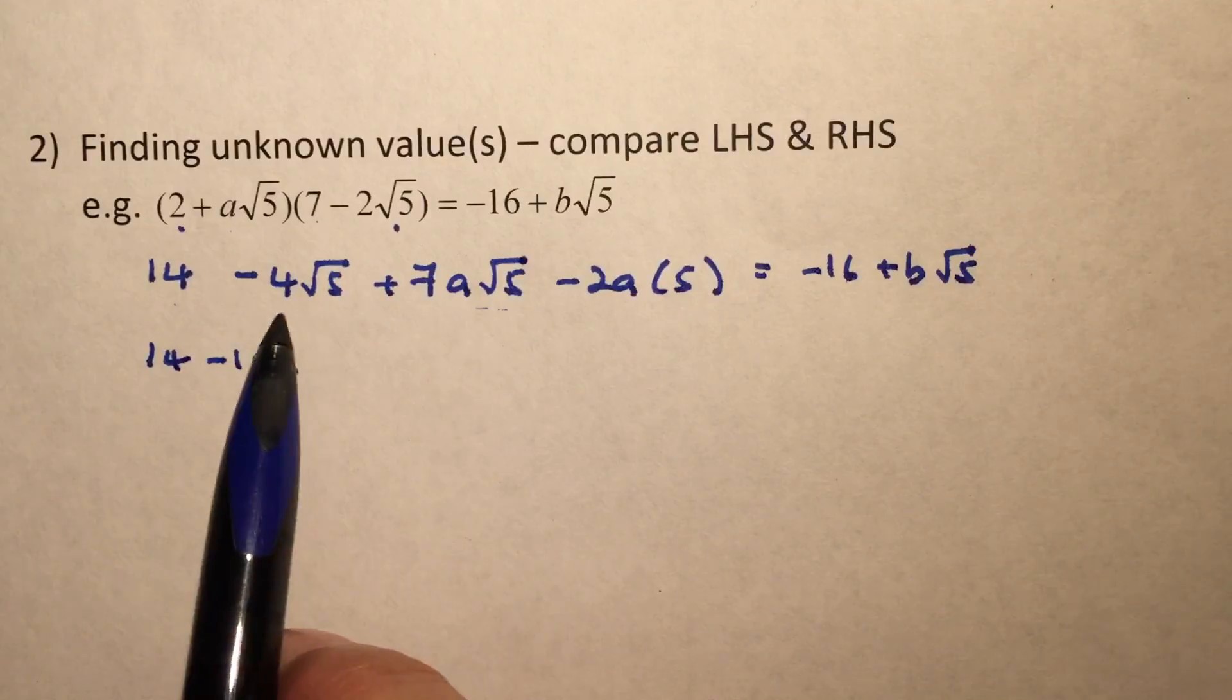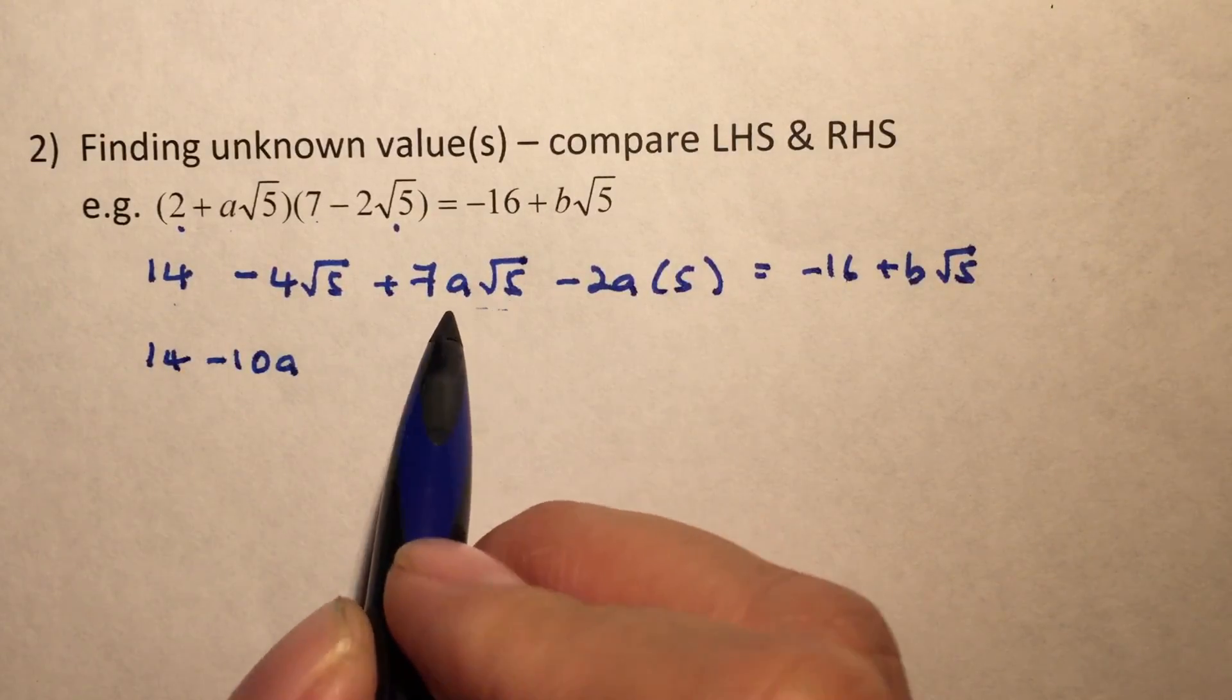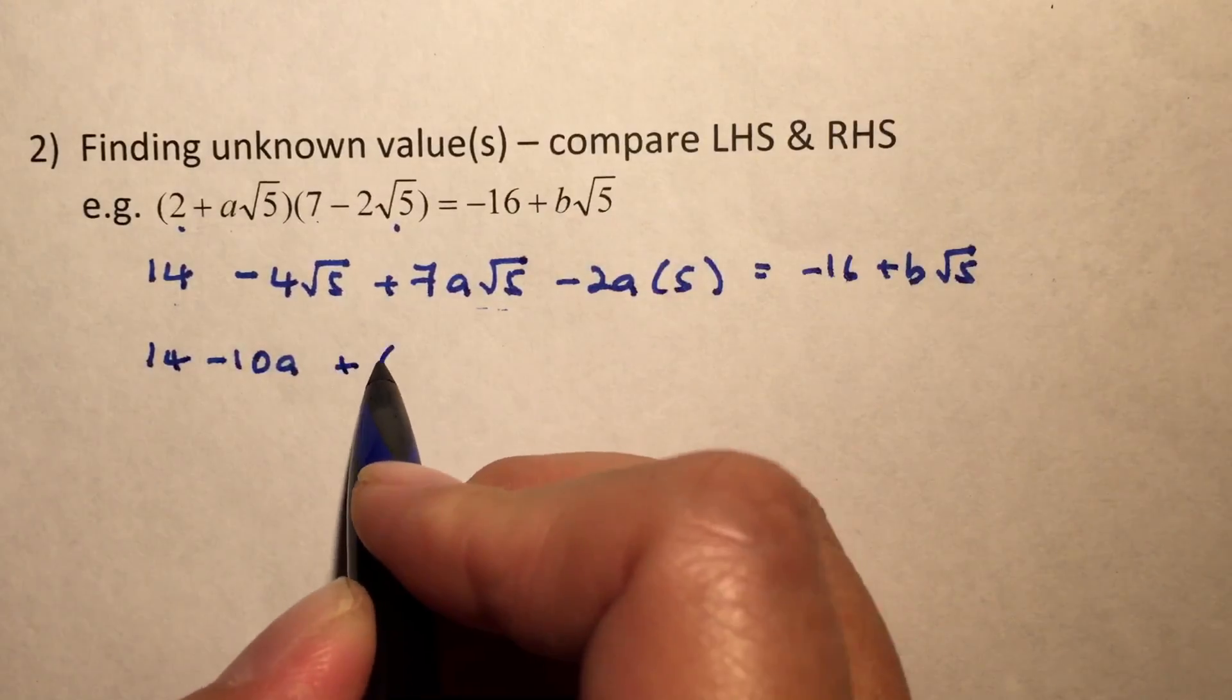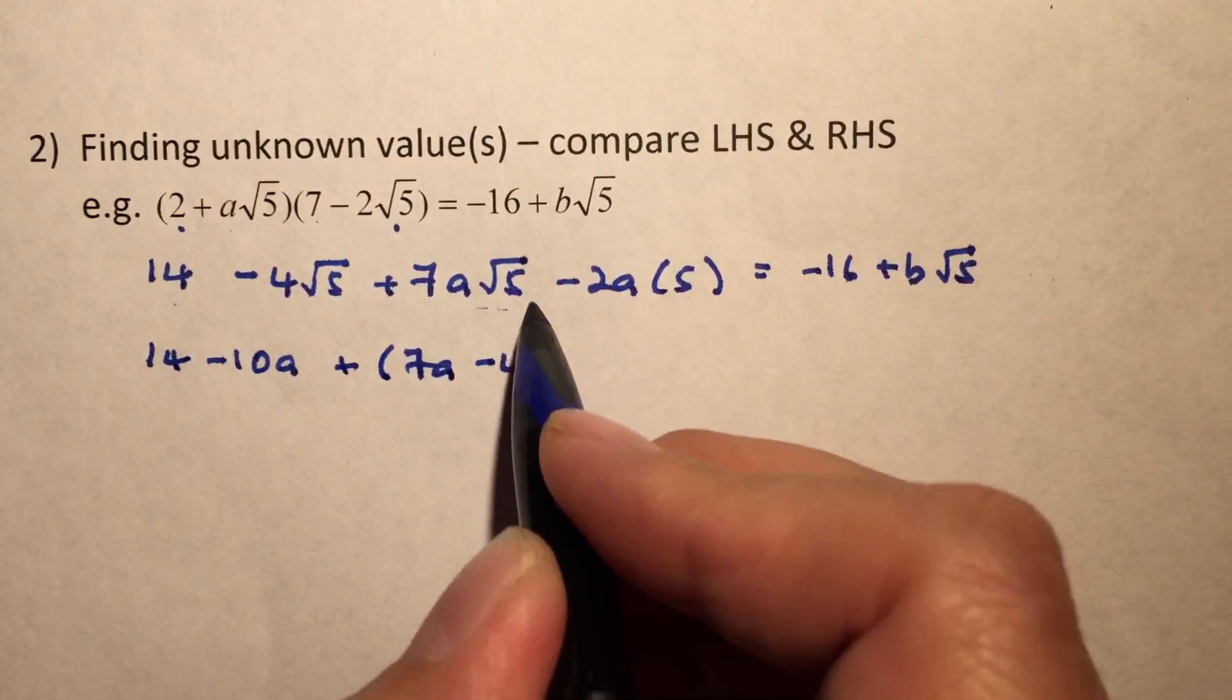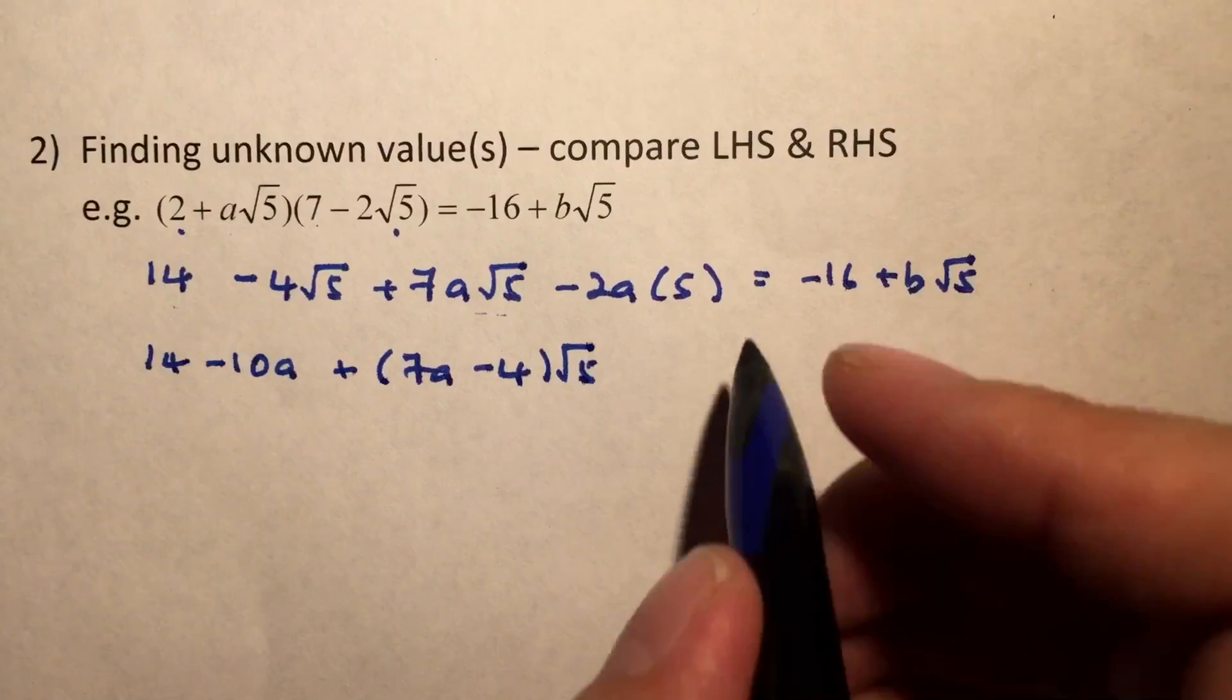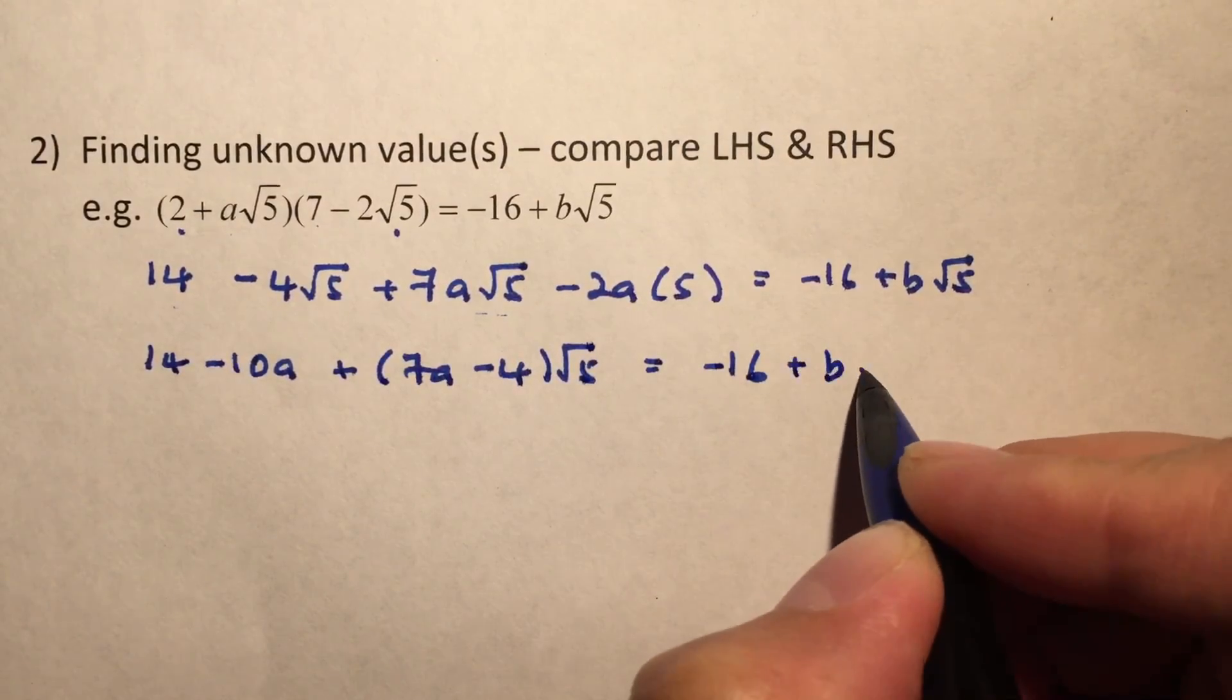And these are my surd terms, or the irrational terms. So you notice that there is √5 and √5. So we can do a factorization out. So we can have 7A minus 4, and we have the √5 here. It's like pulling out a √5. And on the right-hand side, we still have negative 16 plus B√5.